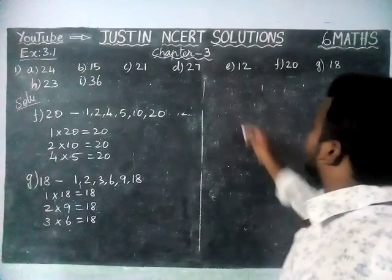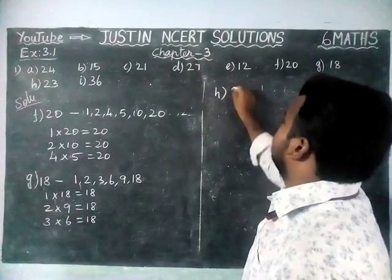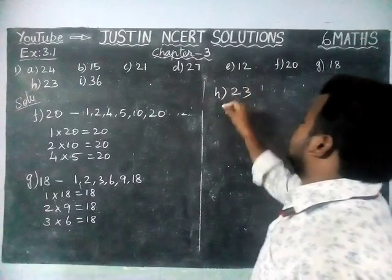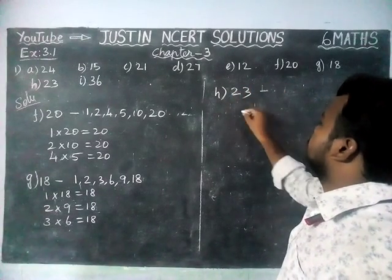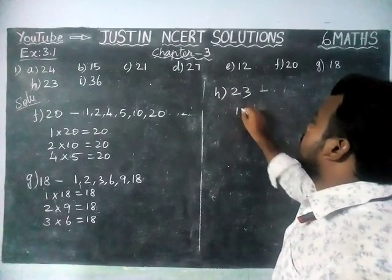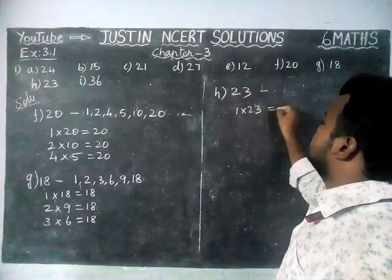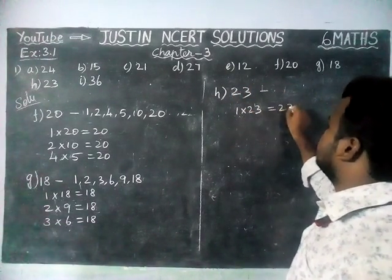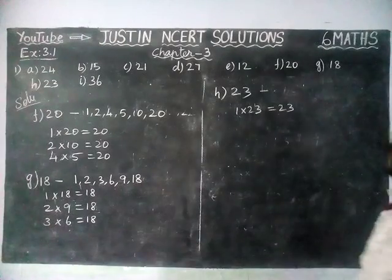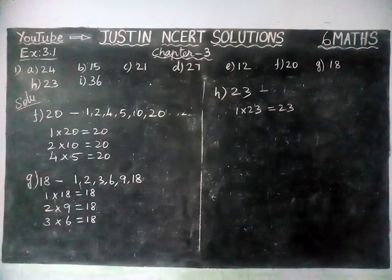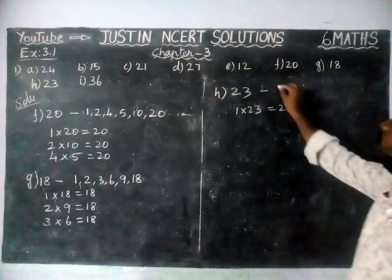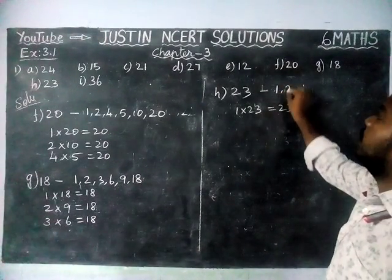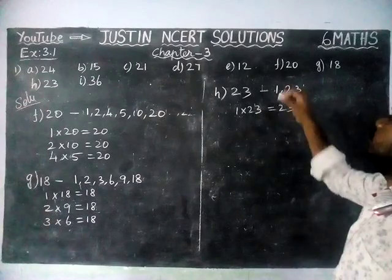Next, option H: 23. 1 into 23 is 23. We don't have any other factor. So factors of 23 are: 1 and 23 only.